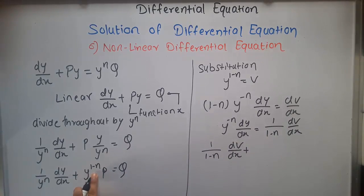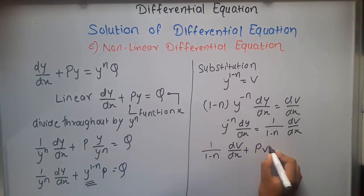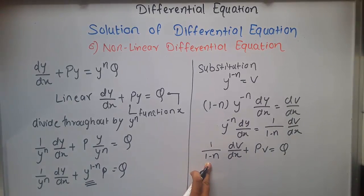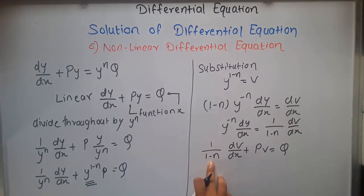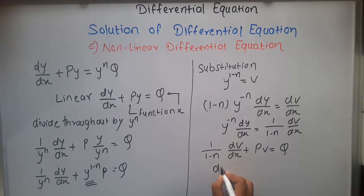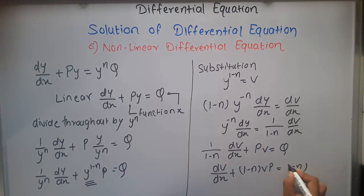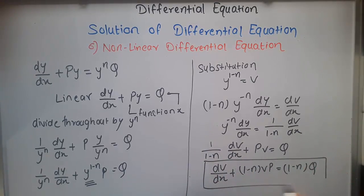Substituting, our equation becomes (1/(1-n)) · dv/dx + Pv = Q. To remove the factor 1/(1-n), we multiply throughout by (1-n), giving us dv/dx + (1-n)Pv = (1-n)Q. This is our linear differential equation form.